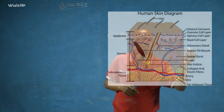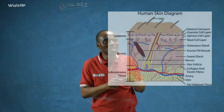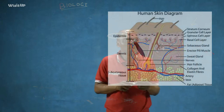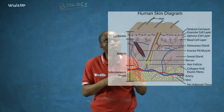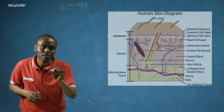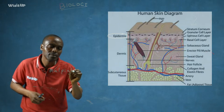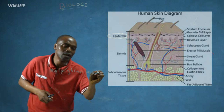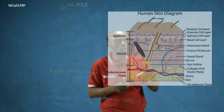The epidermis consists of three layers: namely, one, the stratum corneum; two, the granular cell layer; and three, the spinal cell layer. The granular cell layer is also simply called the granular layer, and the spinal cell layer is also called the Malpighian layer.